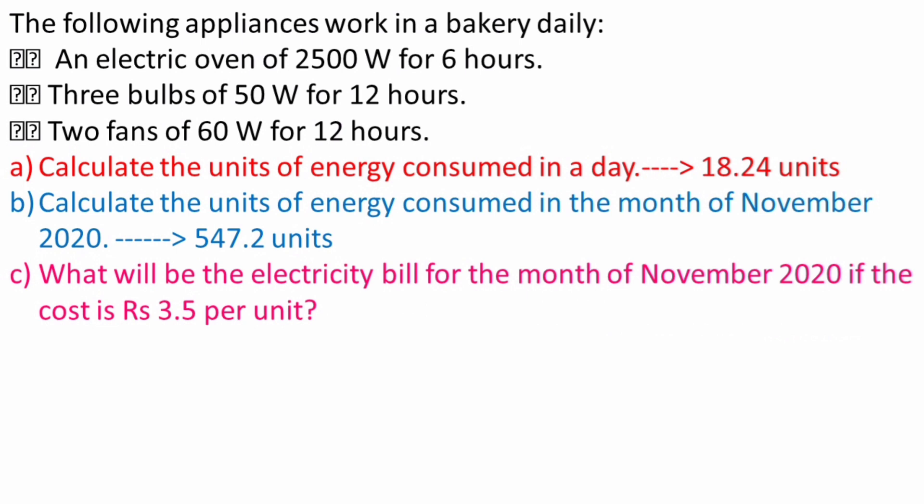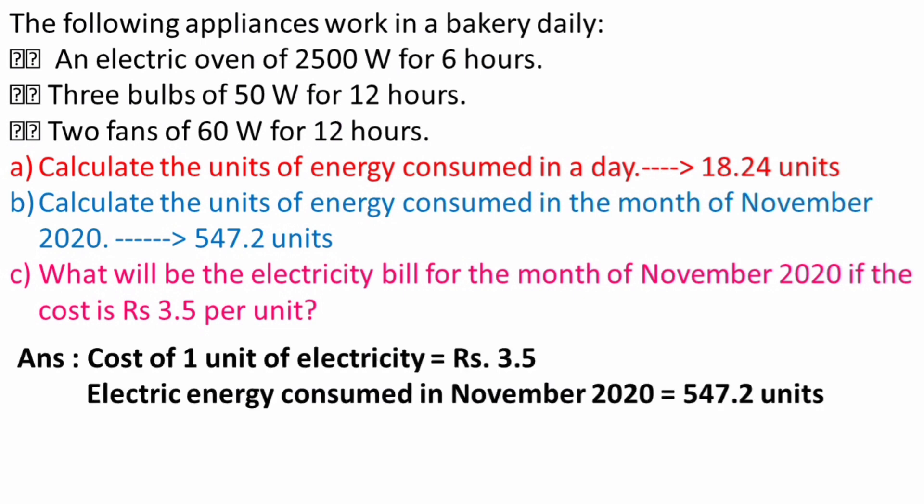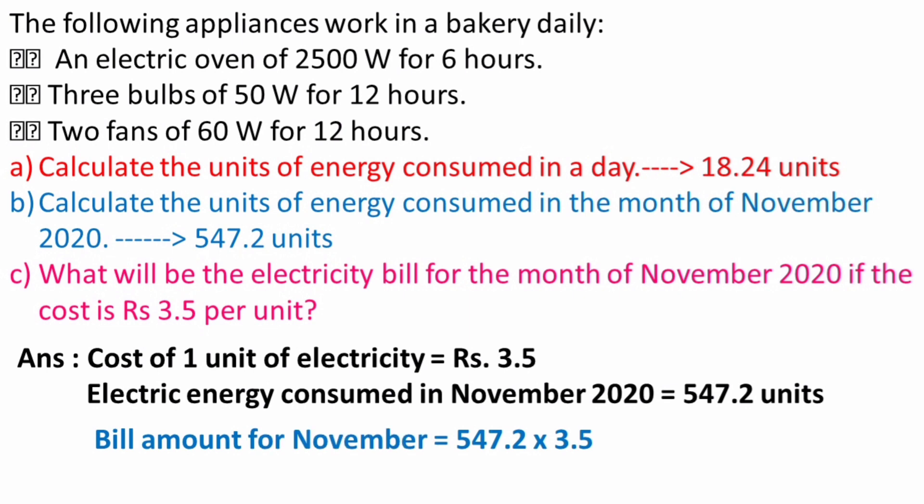Now let's calculate the electricity bill. The cost of 1 unit of electric energy consumed is Rs 3.5. The electric energy consumed in November is 547.2 units. So the total bill is 3.5 × 547.2 = Rs 1915.2.